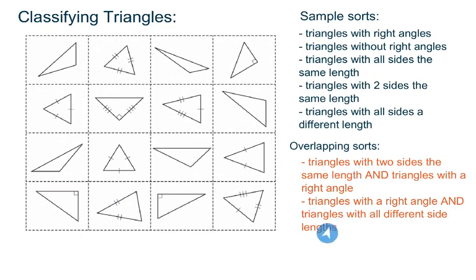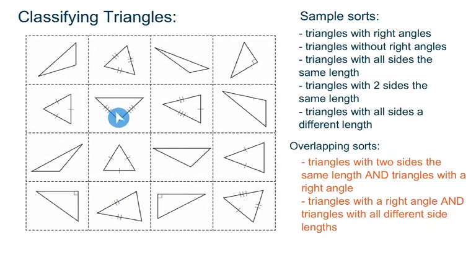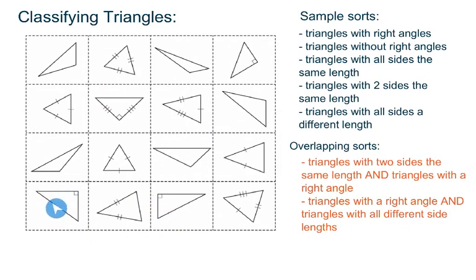Another overlapping sort I could choose: triangles with right angles and triangles with all different side lengths. A triangle with a right angle and all sides a different length — that's what we would assume this one is. It's not marked, so we'd assume the sides are different lengths. It has a right angle and different lengths, so I have a couple that could fall into more than one sort.